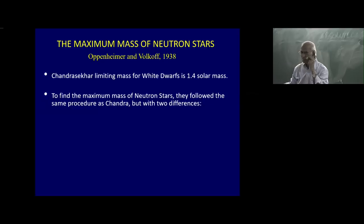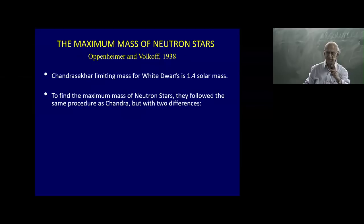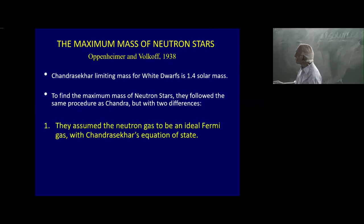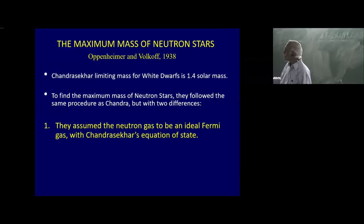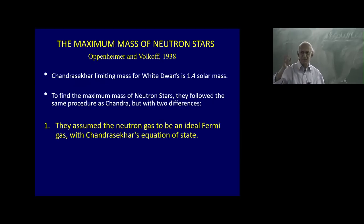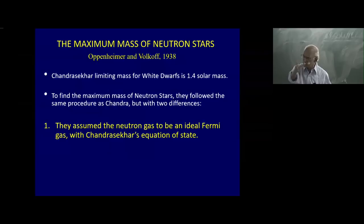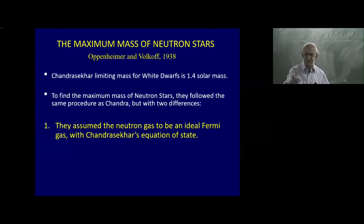He said: look, I want you to do exactly what Chandrasekhar did, but with two differences. The first difference is that instead of electrons supplying the degeneracy pressure, this time gravity is supported by the degeneracy pressure of neutrons. Use the same formula by Chandrasekhar — instead of the mass of the electron, put the mass of the neutron. That's all.